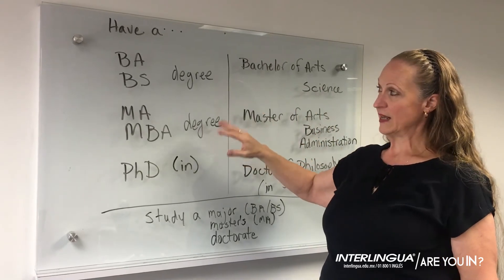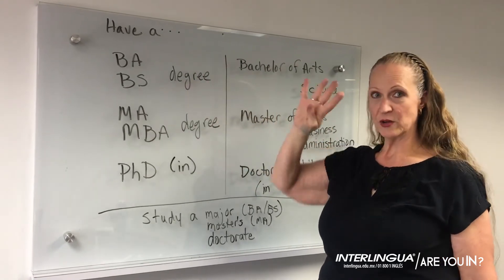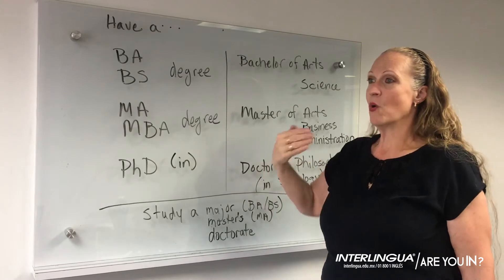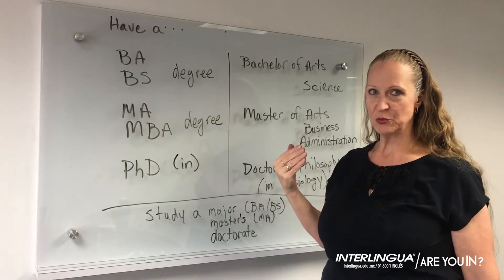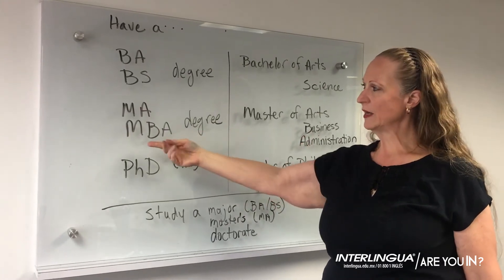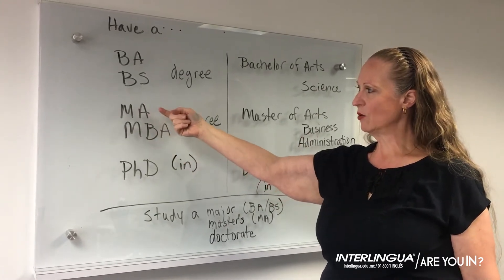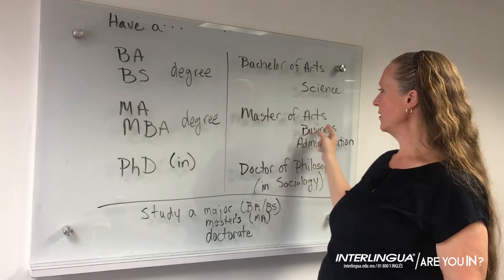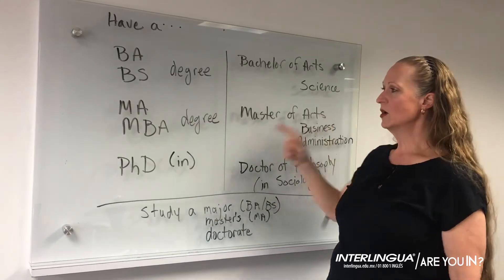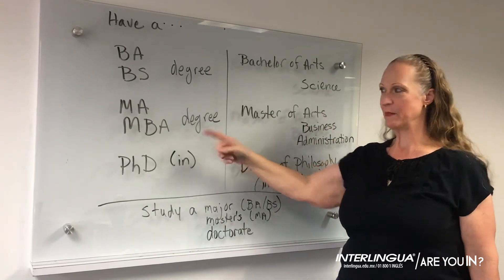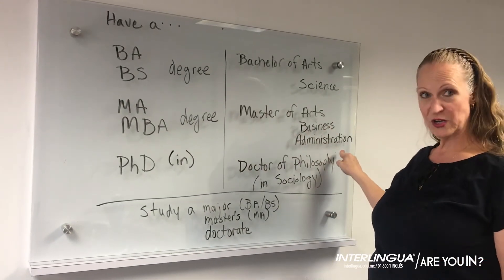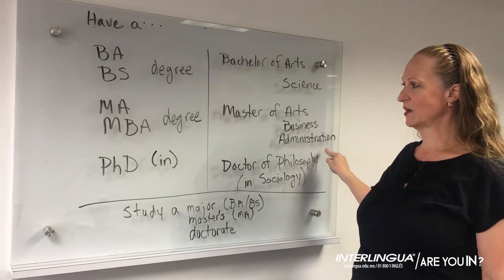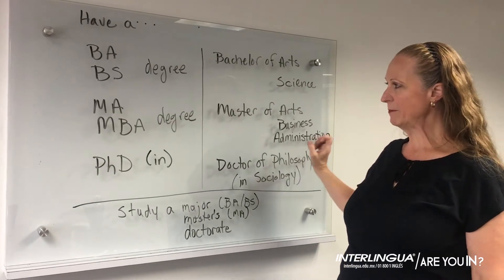This is for four years — when you study for four years. If you study more, usually two more years, you can get an MA or a Master's degree. That's Master of Arts, or an MBA maybe — a Master of Business Administration. There are many possibilities actually.